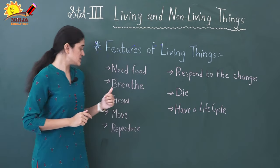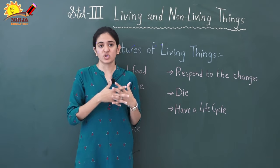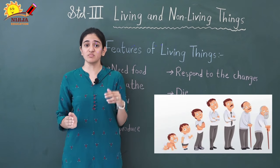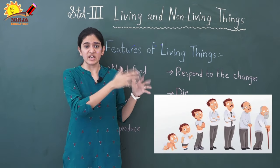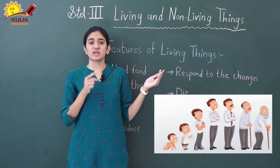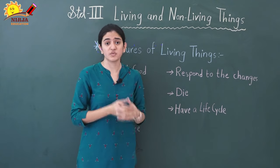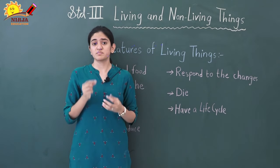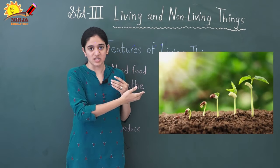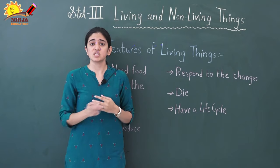Third, living things can grow. For example, take ourselves — when we were small kids, we gradually grew bigger. This process is called growth. Growth can also be observed in plants — first a plant starts as a small seed, then goes through different stages, and finally becomes a plant or a tree.